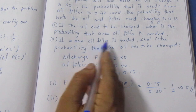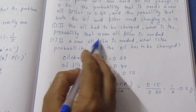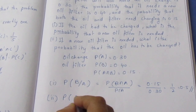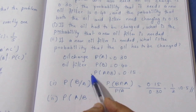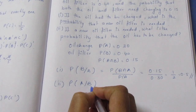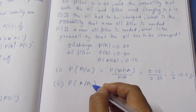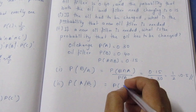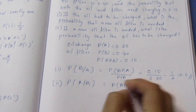If a new oil filter is needed, what is the probability that the oil has to be changed? This is the second part. We want P(A|B) — A is oil change, B is oil filter. The conditional probability formula gives us P(A intersection B) divided by P(B).